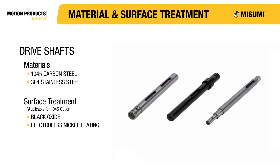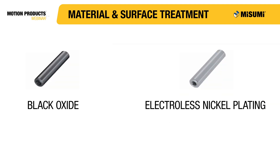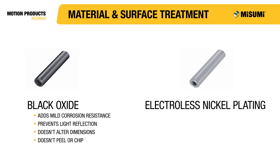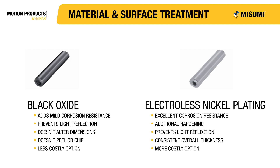The 1045 carbon steel drive shaft option must also be selected with a black oxide or electroless nickel plating finish, and the 304 stainless steel drive shaft has no surface treatment available. Misumi also offers drive shafts with an induction hardened option, as drive shafts are sometimes used directly mounted or coupled to a drive source and may require extra strength. All Misumi 1045 carbon steel shafts come treated with black oxide or electroless nickel plate. The black oxide coating adds mild corrosion resistance, prevents light reflection, does not alter dimensions, and does not peel or chip. It is also the less costly option.